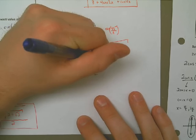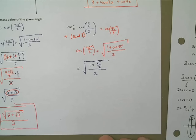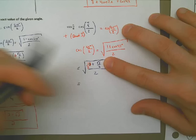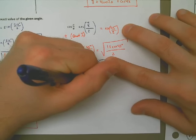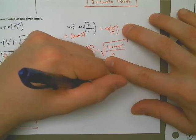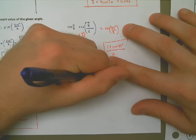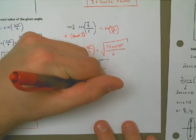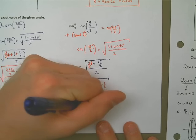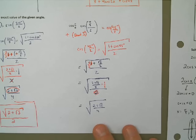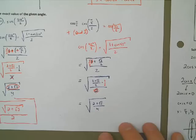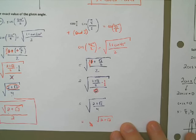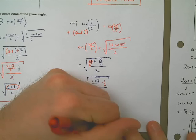Now I need to simplify. I'll call the 1 as 2 halves so I can combine it with square root of 2 over 2. That gives me 2 plus the square root of 2, all over 2, for the numerator, with a 2 on the bottom. Instead of dividing by 2, I'll multiply by one half, which gives me the square root of 2 plus the square root of 2, all over 4.